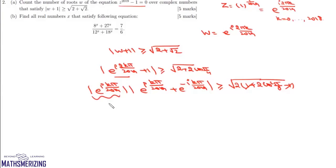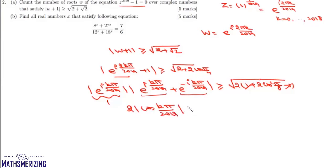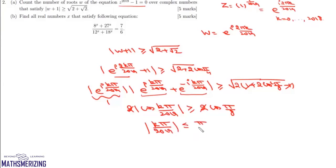The modulus of e^(iθ) is simply 1, and e^(iθ) + e^(-iθ) equals cos θ + i·sin θ + cos θ - i·sin θ. The imaginary parts cancel, giving 2|cos(kπ/2019)| ≥ 2cos(π/8). We cancel the 2's, and since cosine is a decreasing function, we get |kπ/2019| ≤ π/8.